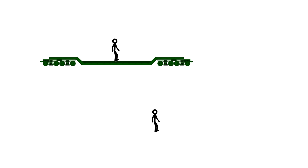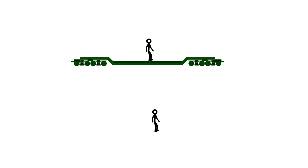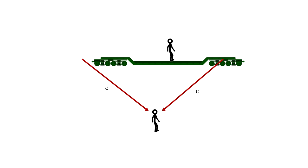To see this, we'll go back to our train example. Here, the observer on the train is in the middle of the car, and as he moves past the observer on the ground, lightning strikes the front and back of the train car.